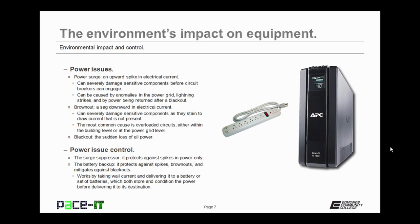Now that we've outlined the issues, let's talk about the control. First up is the surge suppressor. It will protect against spikes in power only. Surge suppressors are better than nothing, but better yet are battery backups. The battery backup protects not only against spikes, but it also protects against brownouts and helps to mitigate the effects of a blackout. Battery backups work by taking wall current and delivering it to a battery or a set of batteries, which both store and condition the power before delivering it to its destination. Battery backups will even out the supply of power. They're very beneficial to have and they will prolong the life of your equipment and help to reduce power issues.